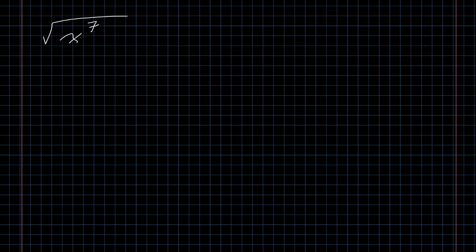So if I have the square root of x to the 7th, I might want to rewrite that as the square root of x to the 6th times the square root of x. Because I know that the square root of x to the 6th is going to be x to the 3rd. I can go through and write out the fractional exponents if I want to. But I know that taking the square root of an even power is going to divide it by 2.